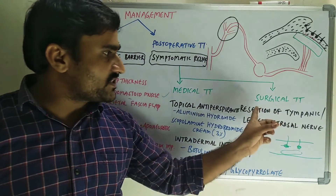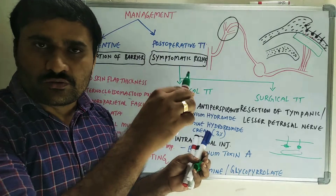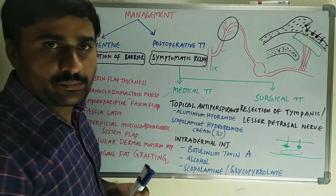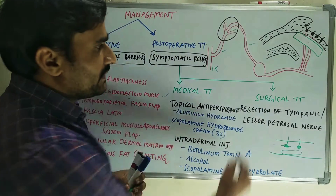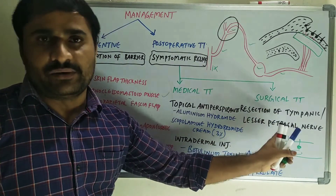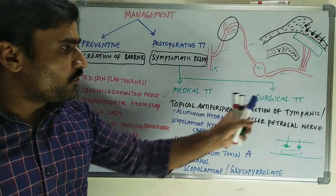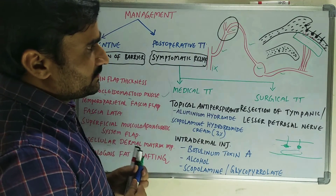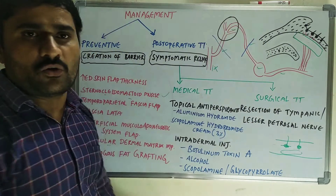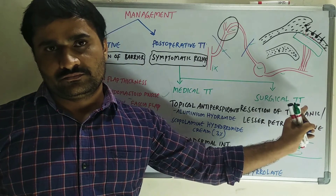In surgical management, you have to go for resection of the tympanic branch or resection of the lesser petrosal nerve. From the inferior salivary nucleus, this is cranial nerve nine (glossopharyngeal nerve), the tympanic branch, tympanic plexus, lesser petrosal nerve, otic ganglion, auriculotemporal nerve, and post-ganglionic parasympathetic fibers. Surgical treatment has certain indications: severe discomfort or recurrence after medical treatment. You can either resect the tympanic branch through the transtympanic approach or resect the lesser petrosal nerve through the intracranial approach.